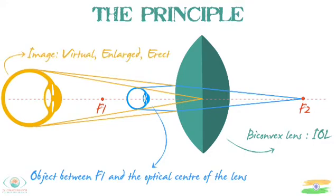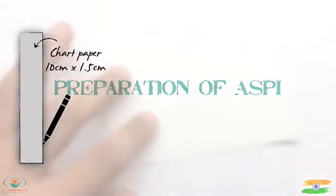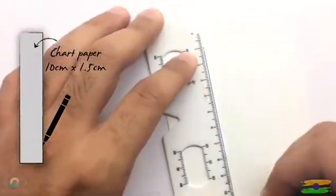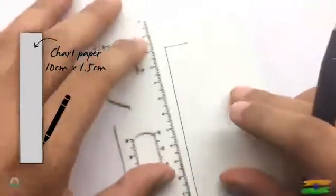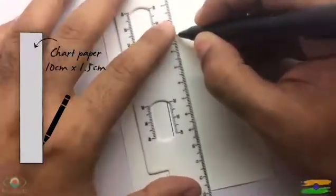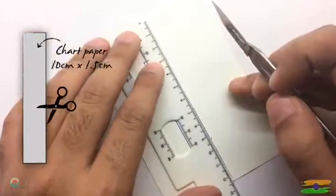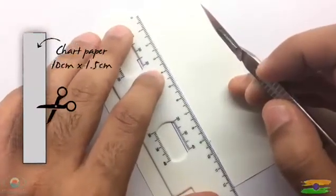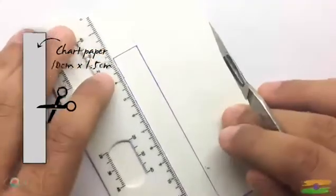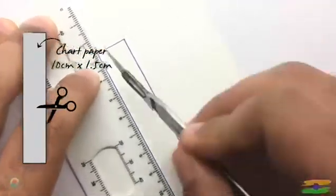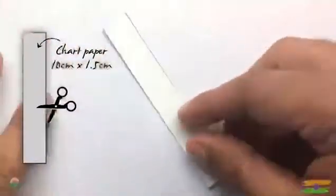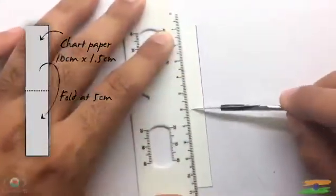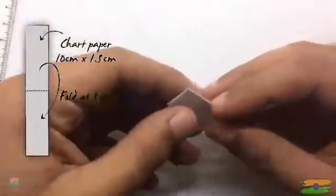This principle of a biconvex lens is being used to make the ASPE device. To construct it, take chart paper and mark a length of 10 cm and a breadth of 1.5 cm. Mark and cut out the shape using a scalpel, an 11 blade, or scissors. Remove the cutout and fold it in half at the 5 cm mark.